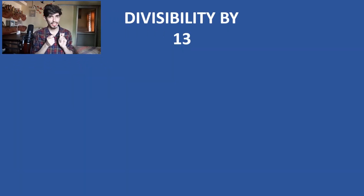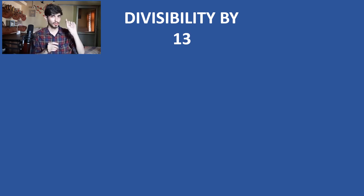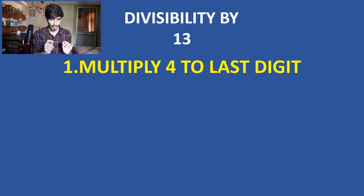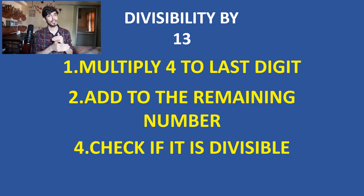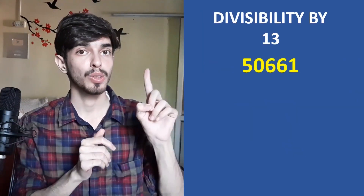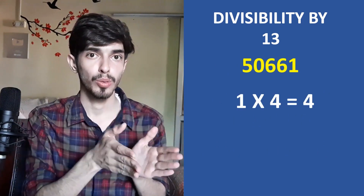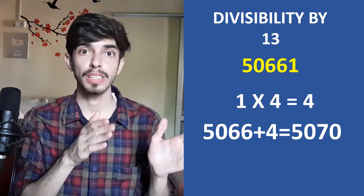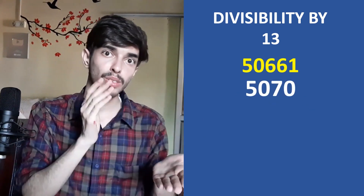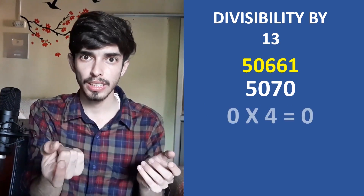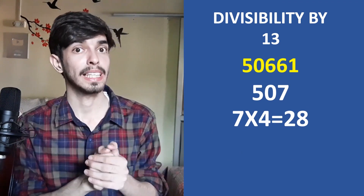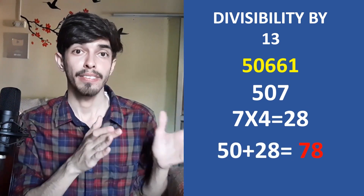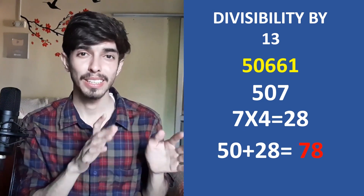The divisibility test for 13 is a little tricky — listen carefully, because exam questions often feature numbers divisible only by 13. Multiply the last digit by 4 and add it to the remaining truncated digits. Repeat if needed. For example, 50661: 1×4=4, 5066+4=5070; then 0×4=0, 507+0=507; then 7×4=28, 50+28=78. Is 78 divisible by 13? Yes — so 50661 is also divisible by 13.